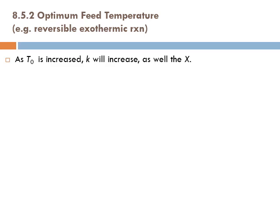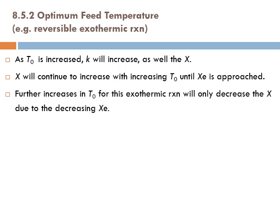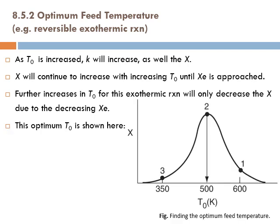As T₀ is increased, the rate constant k increases and conversion x continues to increase with increasing T₀ until x_e is approached. Further increase in T₀ for this exothermic reaction will only decrease the conversion due to the decreasing x_e. We can plot T₀ versus x at the exit of the reactor to visualize this optimum.